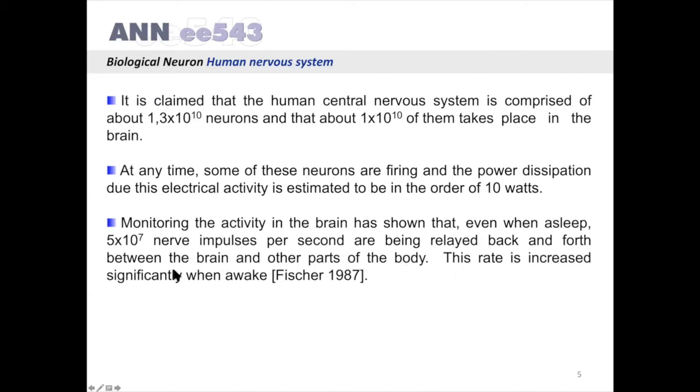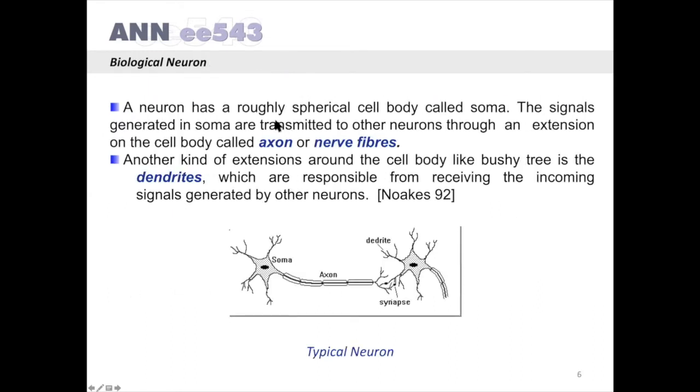A neuron has a spherical cell body called soma. Here is the soma. The signals generated in soma are transmitted to other neurons through an extension on the cell body called axon or nerve fibers. This is the axon.